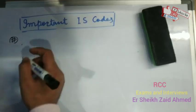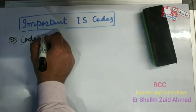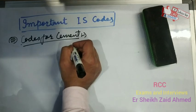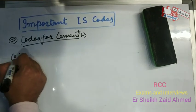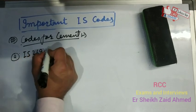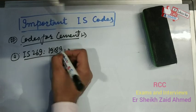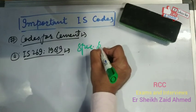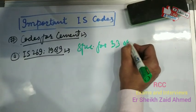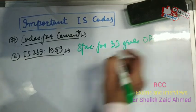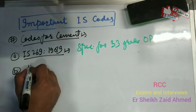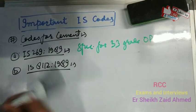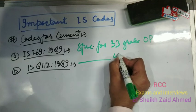Our last type of codes is for cement. The first is IS-269-1989, which is regarding the specification for 33 grade Ordinary Portland Cement (OPC). The next one is IS-8112-1989, which is regarding the specification for 43 grade OPC.